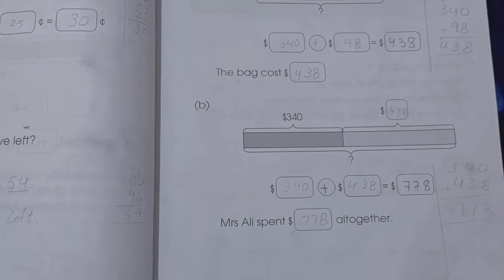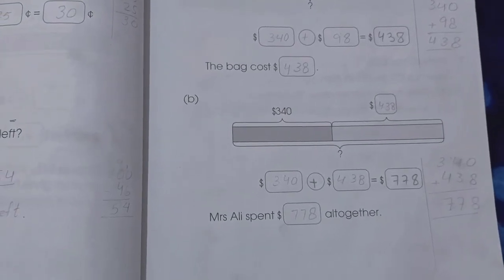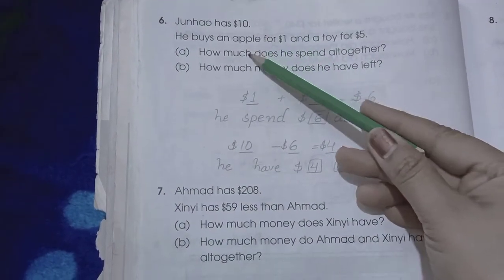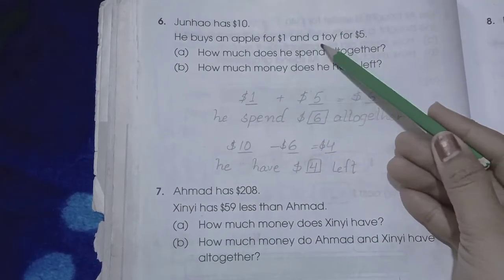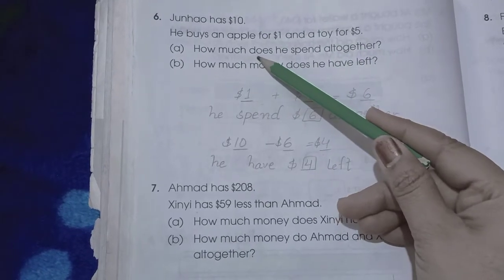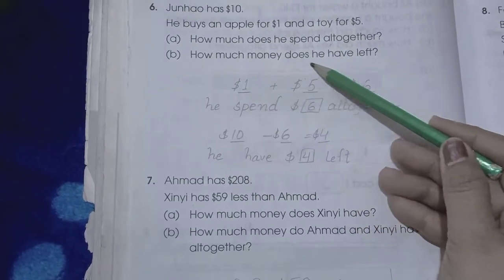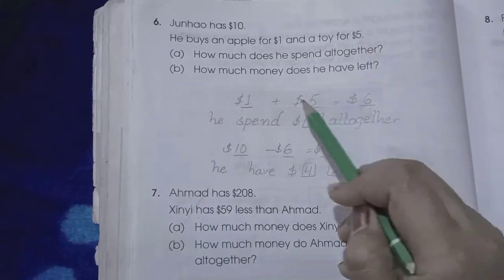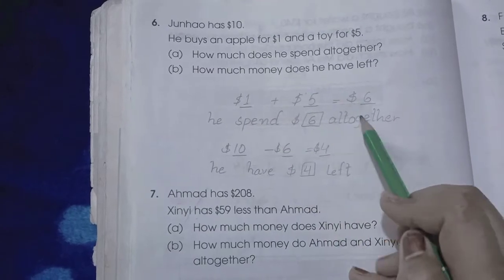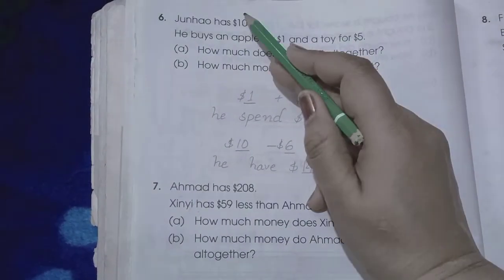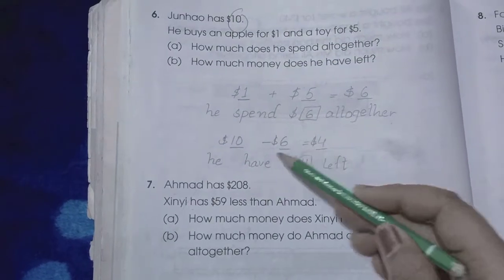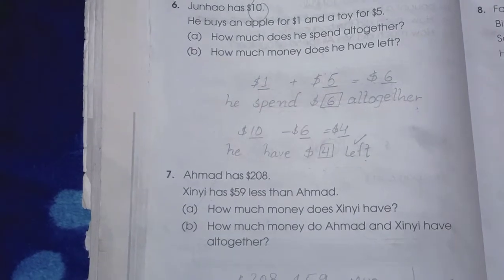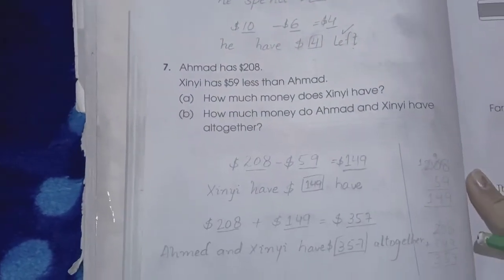Page number 36. Junhao has $10. He buys an apple for $1 and a toy for $5. How much does he spend altogether? How much money does he have left? First we find the spending: 1 plus 5 is $6. He spent $6 altogether. Now from the $10 we subtract this $6. So 10 minus 6 is 4. He has $4 left.